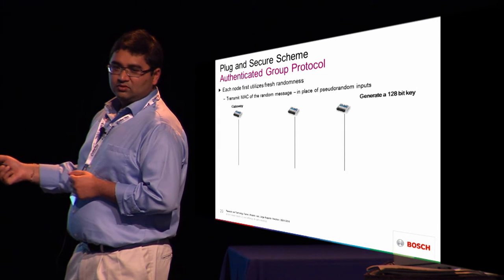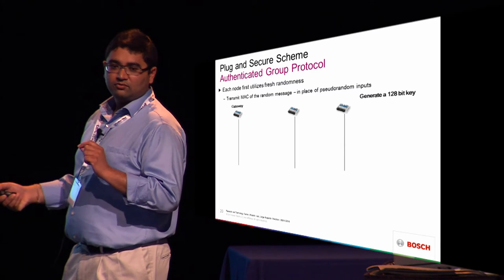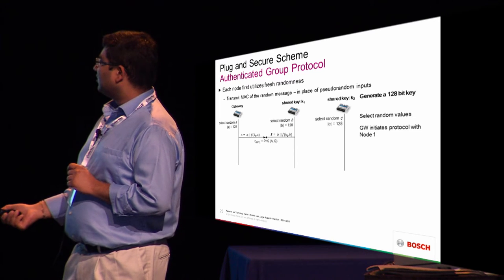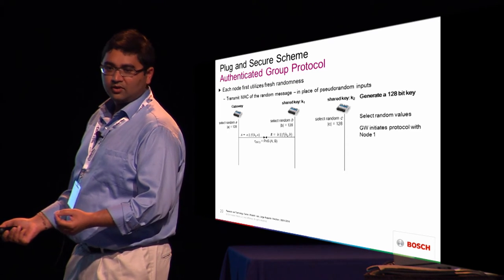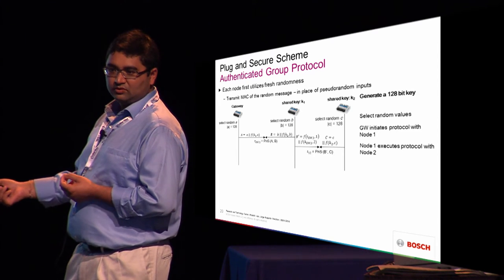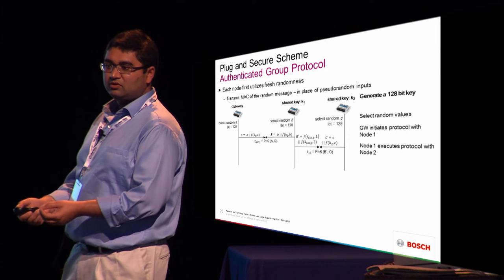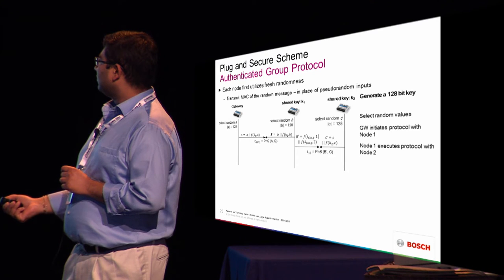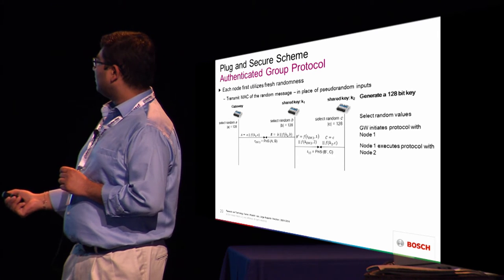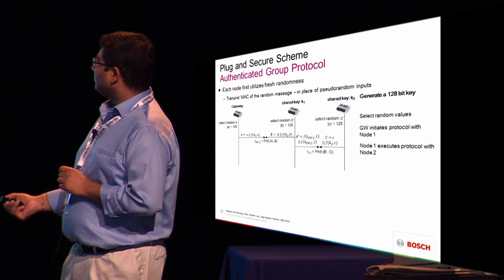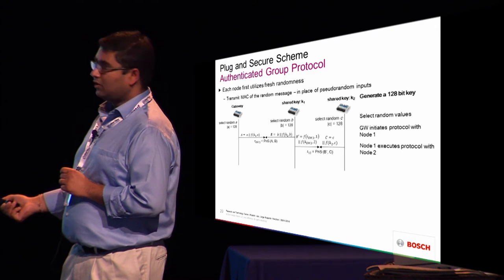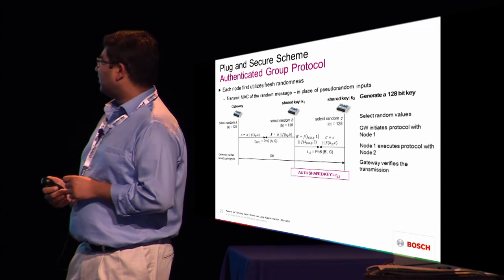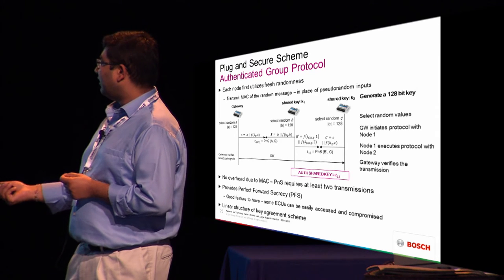Instead of the gateway broadcasting a nonce, it transfers a nonce to just one node secretly using the basic plug-in secure. The protocol then proceeds using the linear structure — you have to go back to a linear structure rather than a tree. Where nodes were using pseudo-random values, instead they use true random values and then a tag on these true random values to do plug-in secure. That would give you a shared authenticated key with perfect forward secrecy.